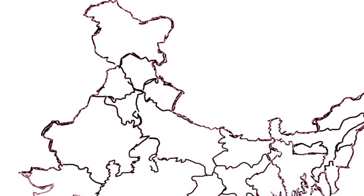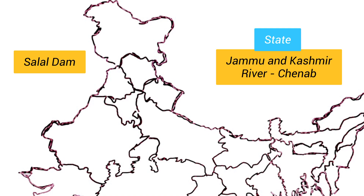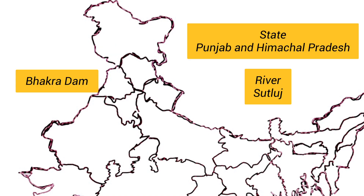On the outline map of India, I am locating Salal Dam. It is located in the state of Jammu & Kashmir, on the river Chenab. It is located in the southwest part of Jammu & Kashmir.